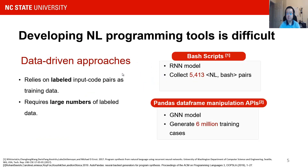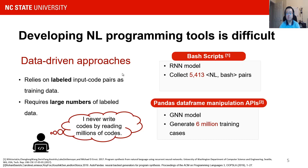However, developing a natural language programming tool is difficult. The most popular existing approaches are data-driven, which always rely on labeled input-code pairs as training data, and always require a large number of them. For example, an RNN model that generates batch scripts uses more than 5,000 training examples, and a GNN model that generates Pandas data frame manipulation APIs uses 6 million training cases. Acquiring such large datasets takes huge effort from developers. But there is always a doubt in my mind: I never wrote code by reading millions of code examples.